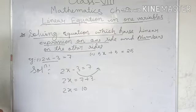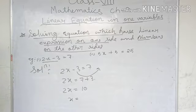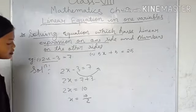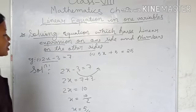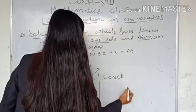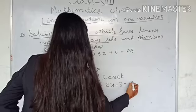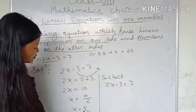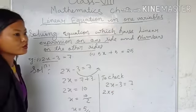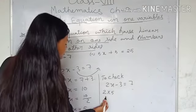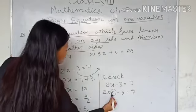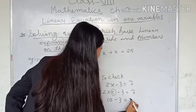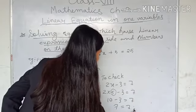Now we need the value of x. Since 2 and x are multiplied on the left hand side, if we transfer 2 to the right hand side it becomes divide. So x equals 10 divided by 2, which gives x equal to 5. To check: our expression is 2x minus 3 equal to 7. Substituting x equals 5: 2 into 5 minus 3 equals 7. 2 fives are 10, and 10 minus 3 is 7, equal to 7. So we got the right answer.